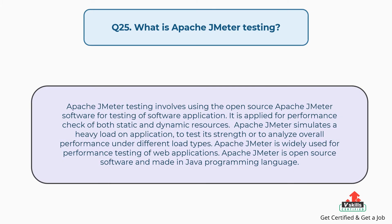Question 25: What is Apache JMeter testing? Apache JMeter testing involves using the open source Apache JMeter software to test software applications. It is applied for performance checks of both static and dynamic resources. Apache JMeter simulates a heavy load on an application to test its strength or to analyze overall performance under different load types. It is widely used for performance testing of web applications and is made in Java.